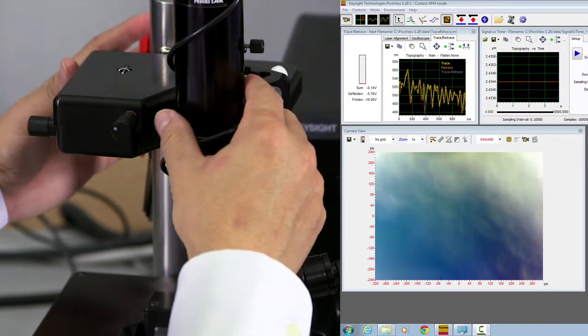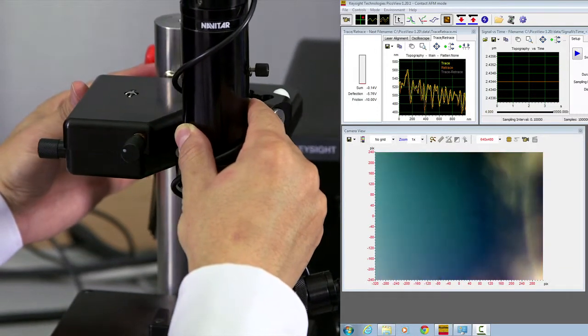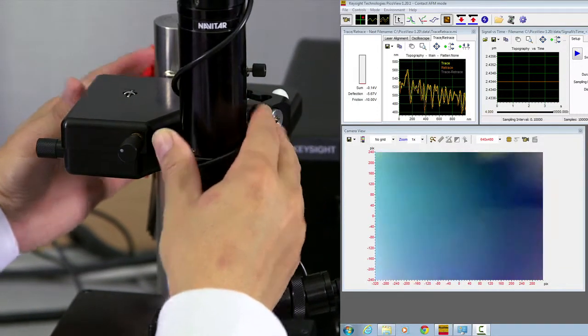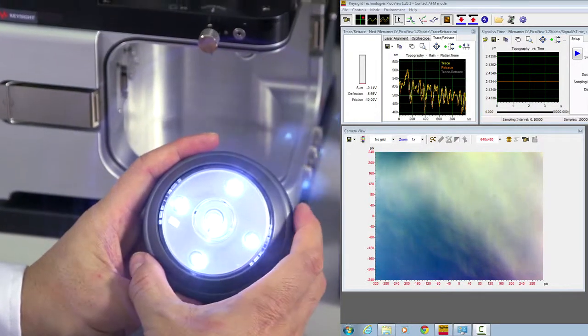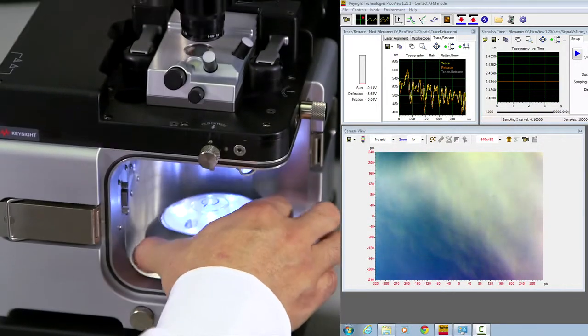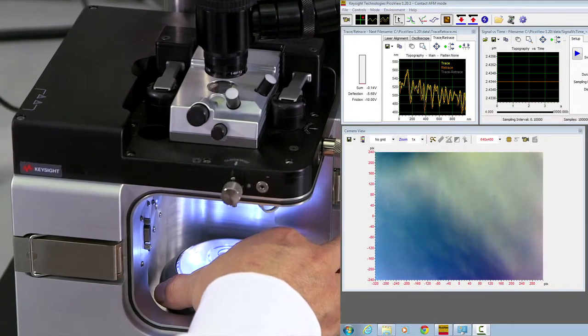You can rotate the optical microscope assembly itself. Make sure it can be rotatable. And then you turn on the LED light and put in the environment chamber to allow some transmission light through the scanner itself.